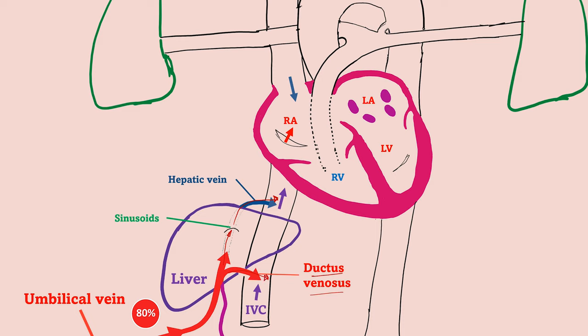This blood then enters the inferior vena cava. When it reaches the right atrium, about two-thirds of the blood passes from the right atrium to the left atrium through the foramen ovale, and one-third goes to the right ventricle.